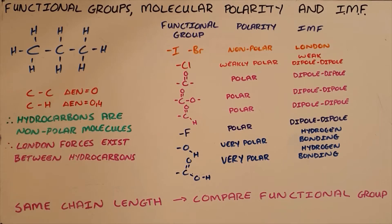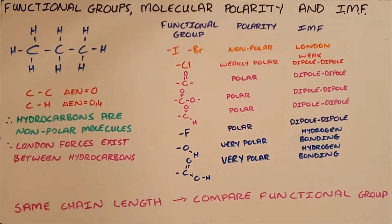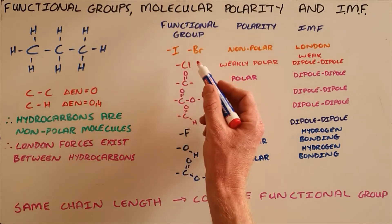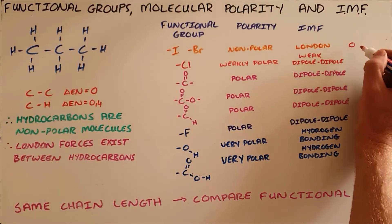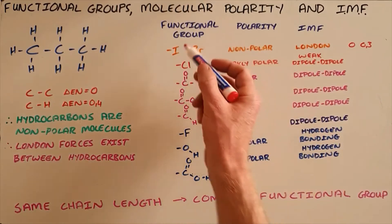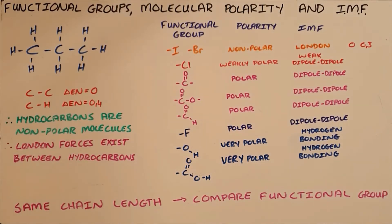There are two ways to compare molecular polarity and intermolecular forces in organic molecules. The first is for molecules that have the same chain length, where the only difference is the functional group. Here I have laid out a table in order of increasing polarity. Hydrocarbons are non-polar molecules. The halogens iodine and bromine are also non-polar, having electronegativity differences of zero and 0.3 respectively, so any molecule containing one of these groups is also non-polar and the intermolecular forces are London forces.